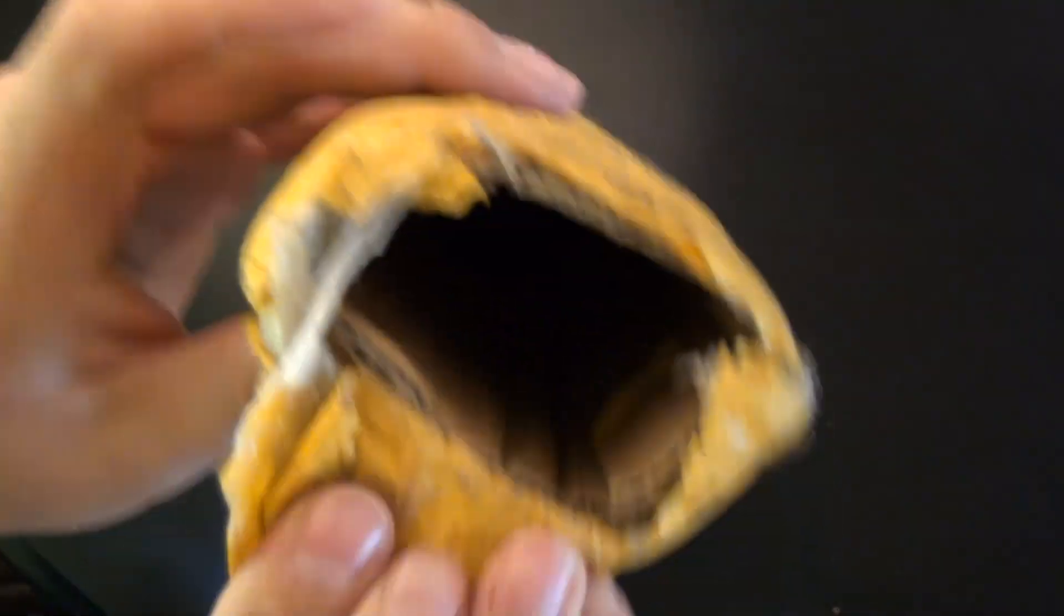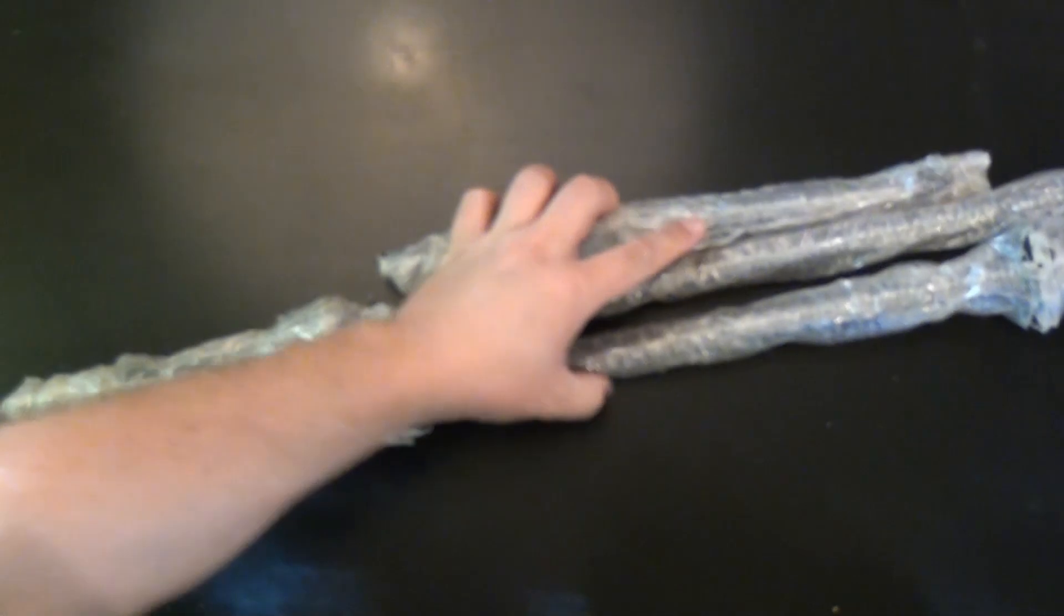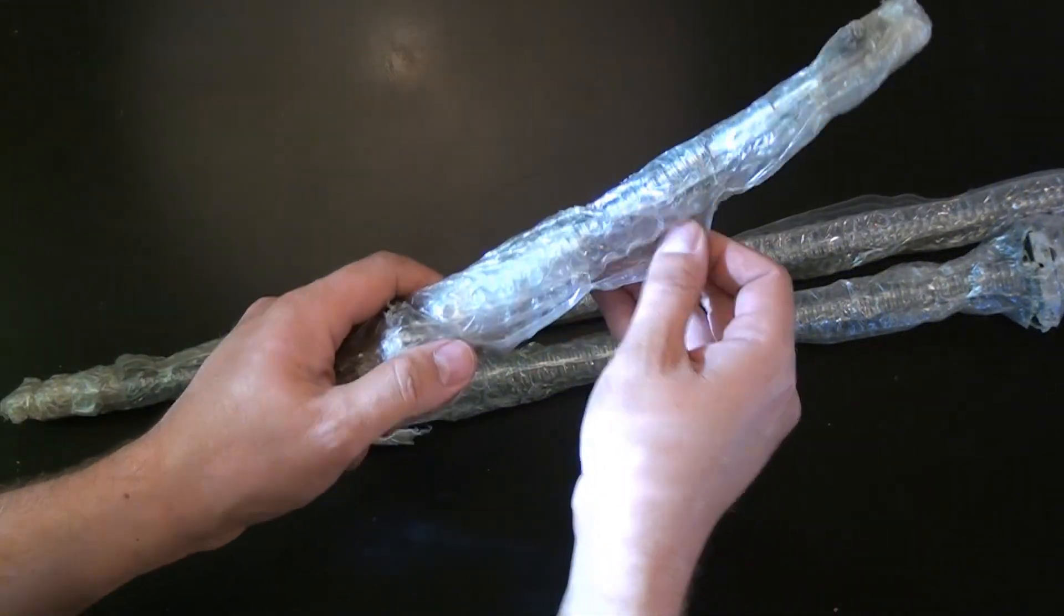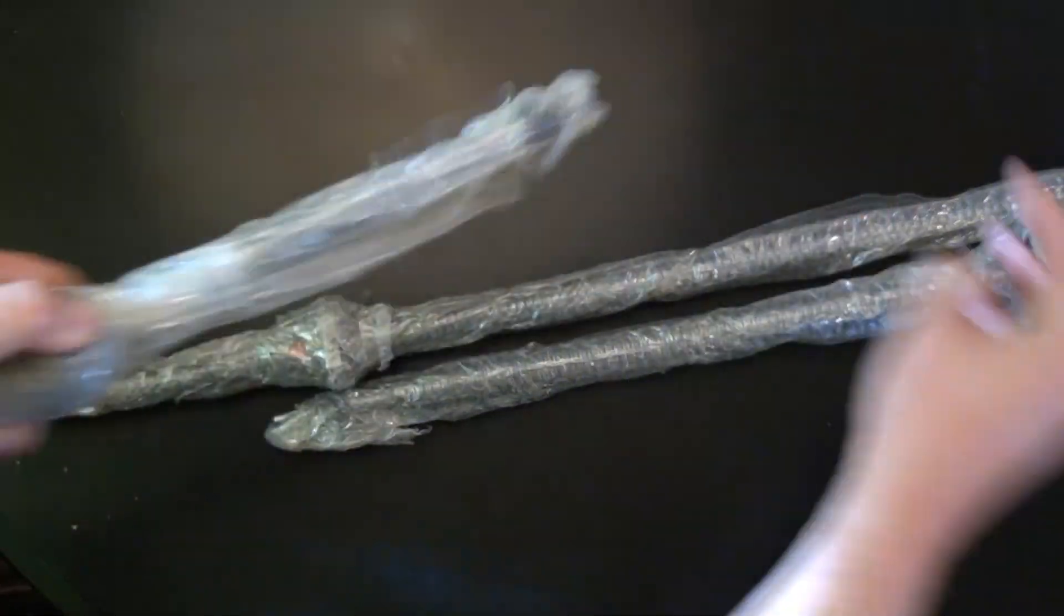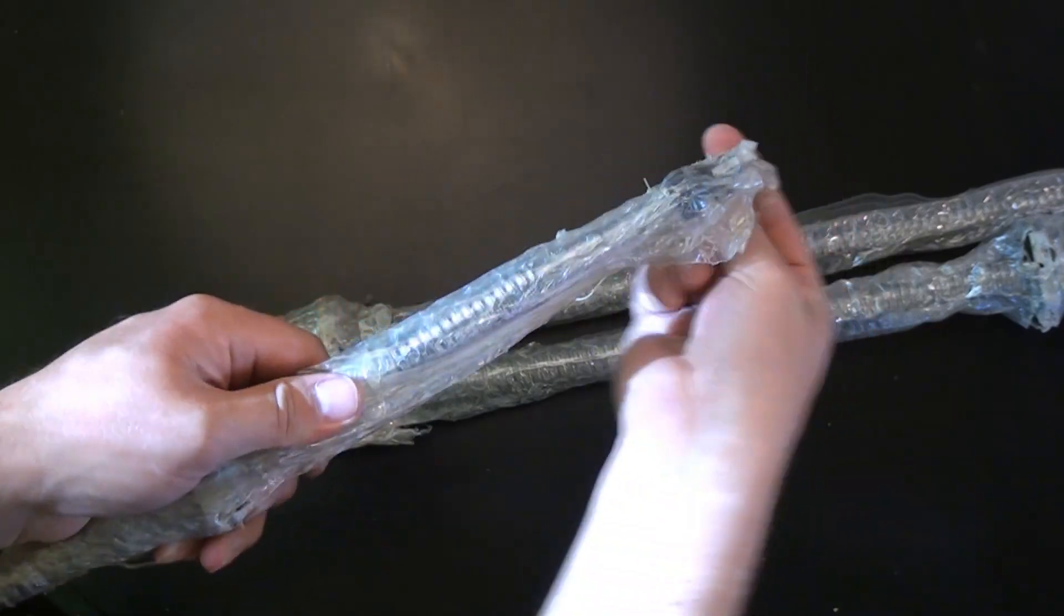Hey guys, this is a quick video about the C7 ball screws that I ordered from Linear Motion Bearing. You can find him on eBay. You can see the tube that they came in and they were all wrapped with a single wrap of bubble wrap. The packaging was pretty good. I did have a chip